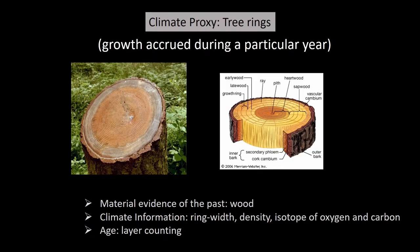Tree rings are also very useful proxies. A ring represents growth that occurred during a particular year. The material evidence is wood, and information such as ring width, ring density, and isotopic composition of oxygen and carbon in the material within the ring gives us information about past climate. We can assign a calendar year to each ring by ring counting — if we know the year the tree was cut, we assign that year to the outermost ring and count back.